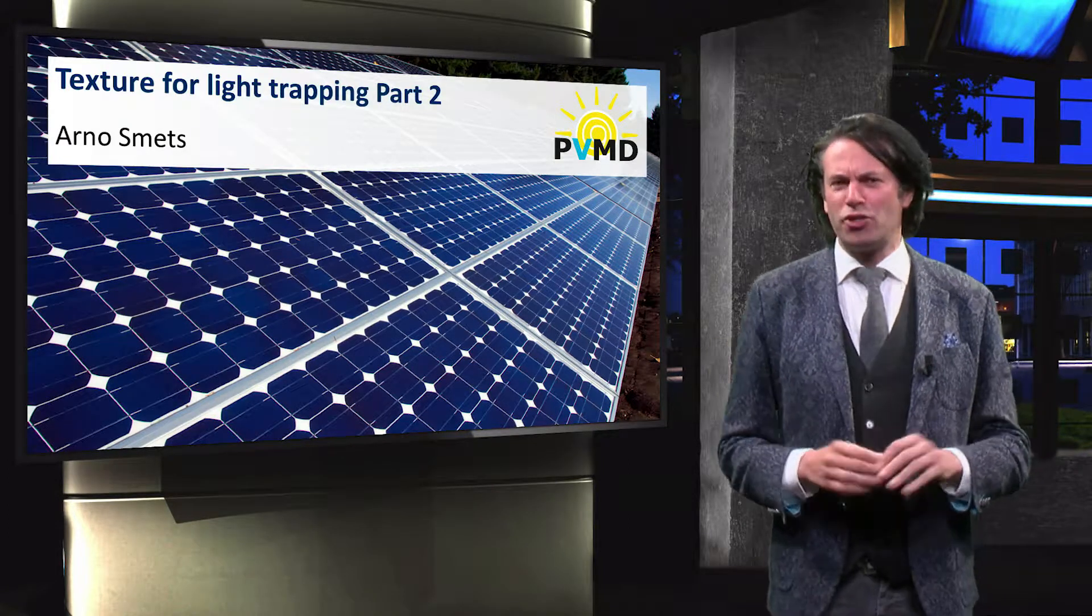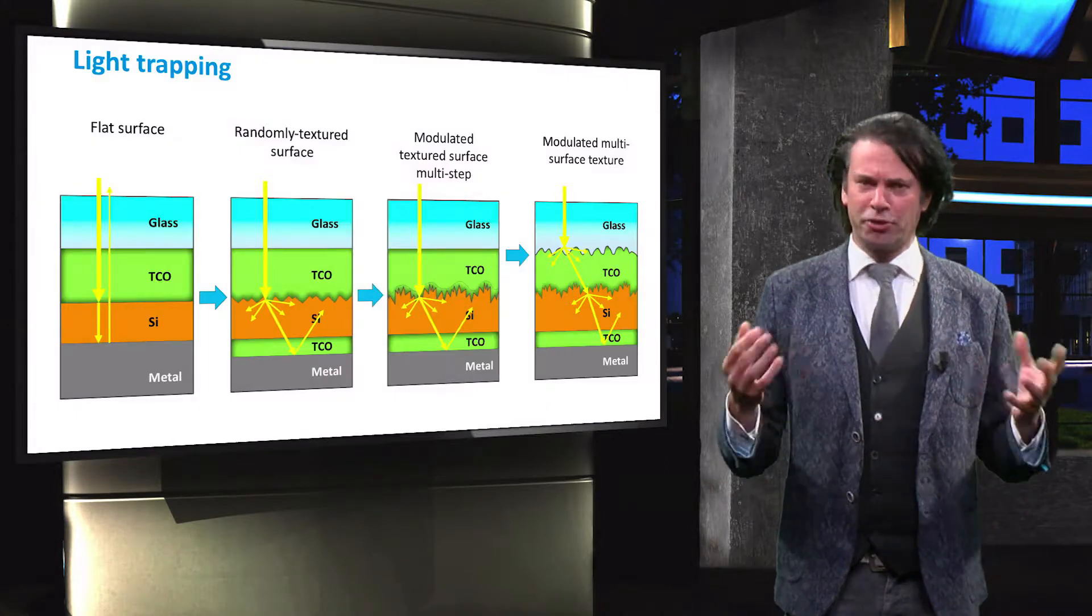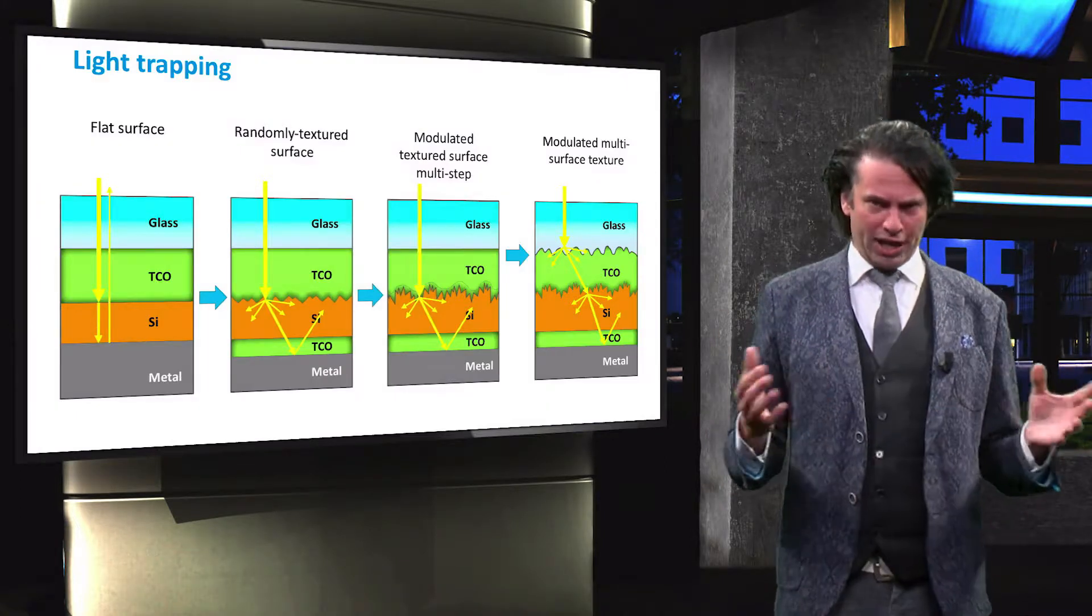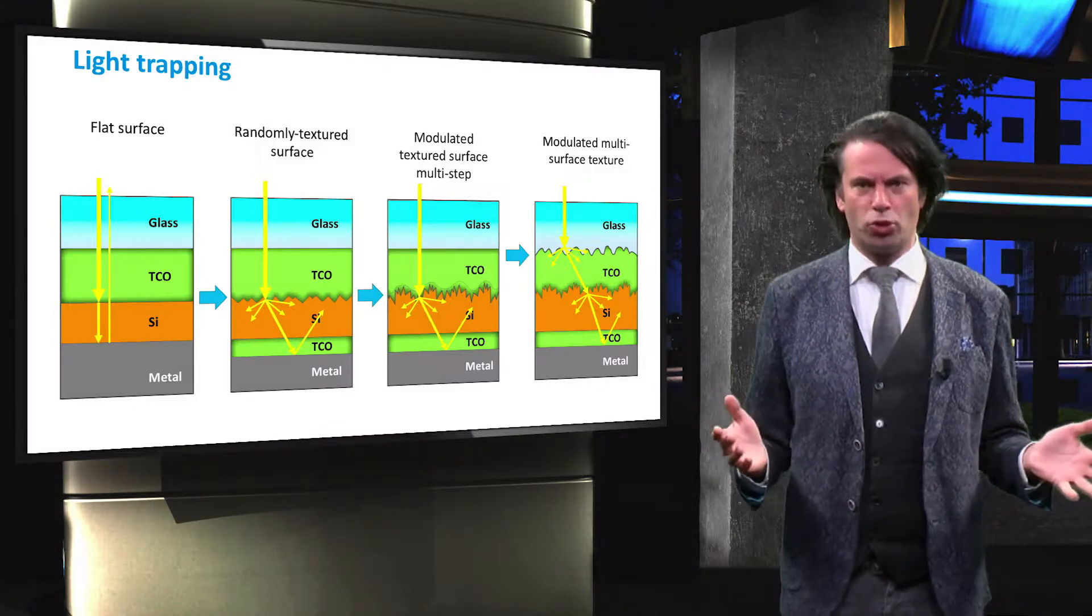In the previous video we started our discussion of surface roughness. We discussed how texturing increases the path length of light through an absorber layer without increasing the geometrical thickness of the absorber.